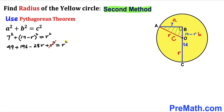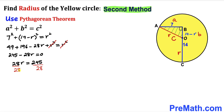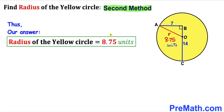The r² terms cancel, giving us 245 − 28r = 0. Moving terms: 28r = 245. Dividing both sides by 28, our radius r is 8.75 units. The radius of this yellow circle turns out to be 8.75 units using the second method.